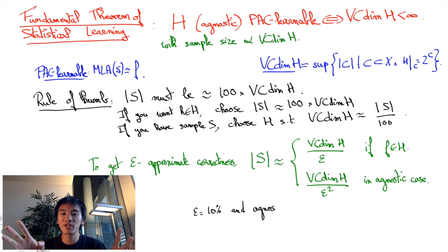So again, if you want 10% approximate correctness, you'll need your sample size to be at least 100 times the VC dimension. Evidently, the more data you'll get, the better you'll learn.